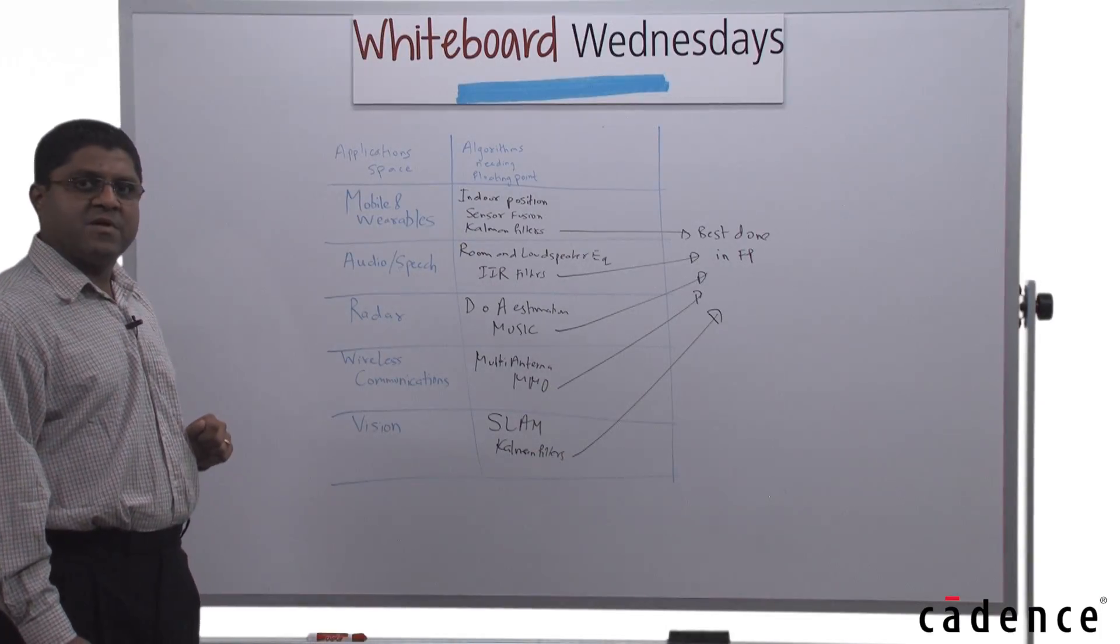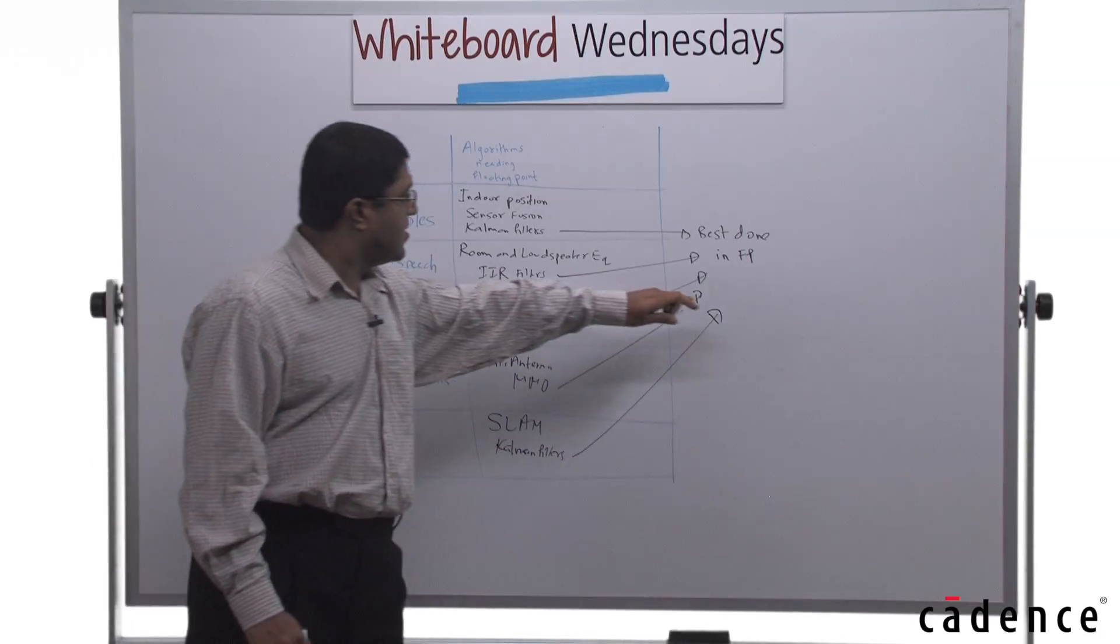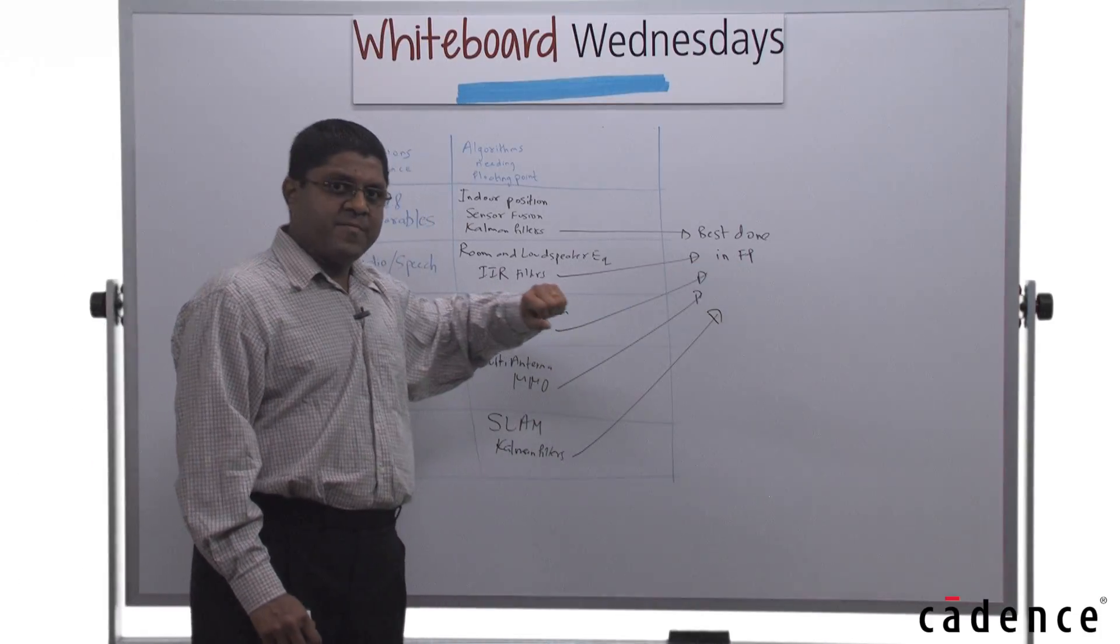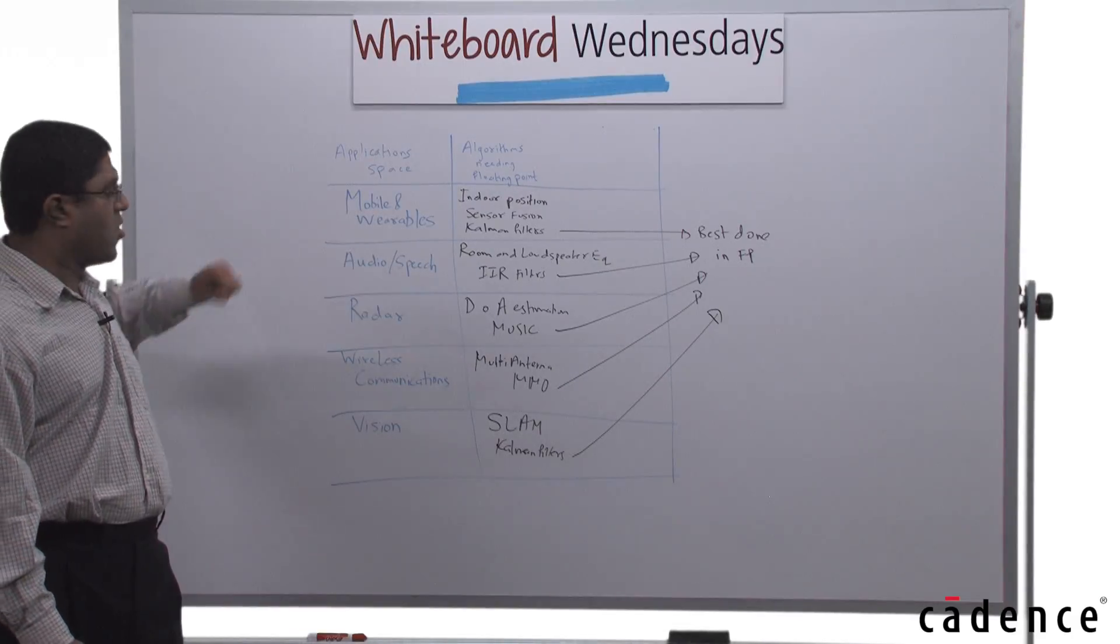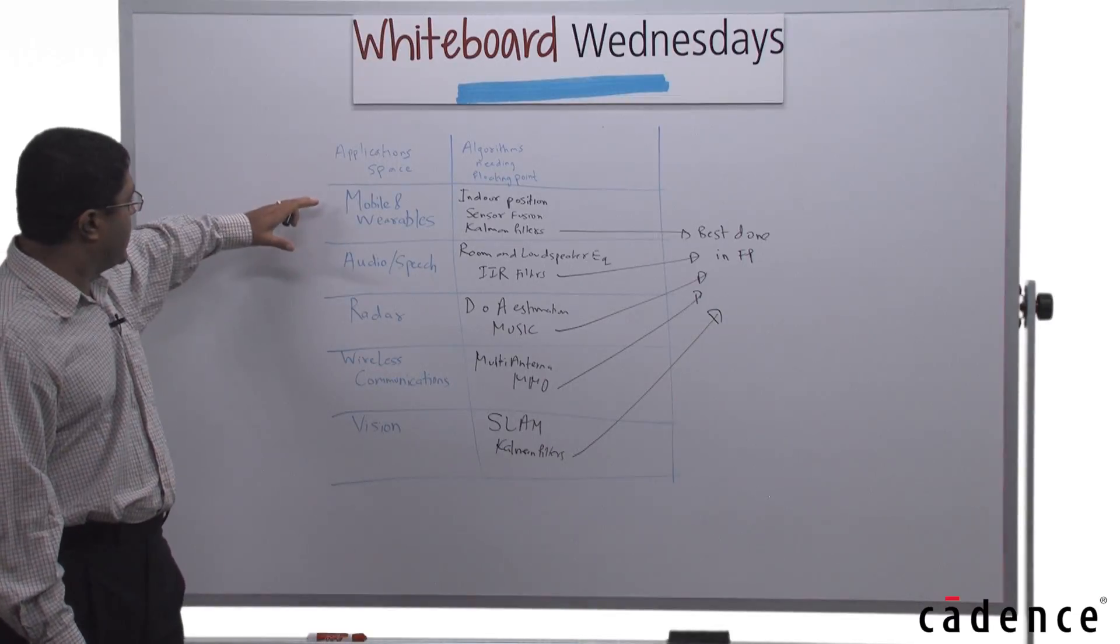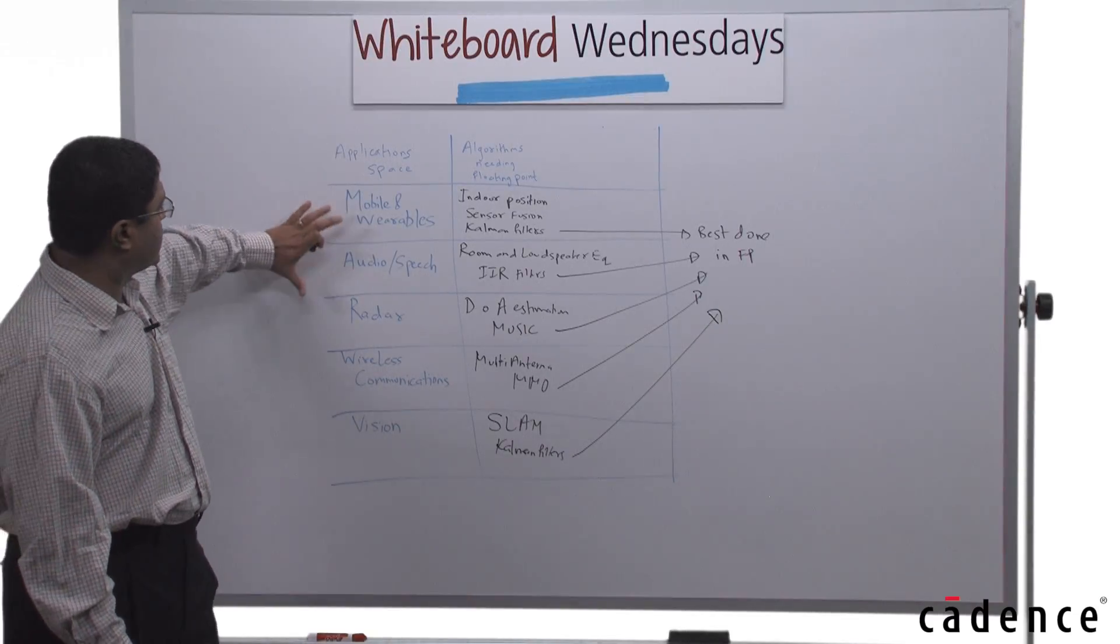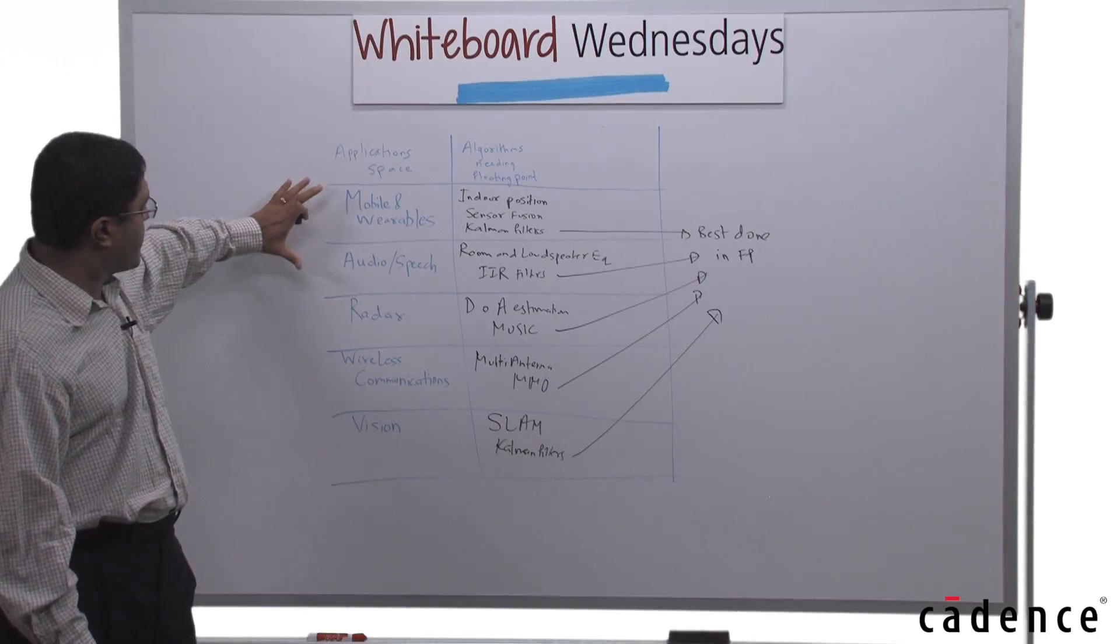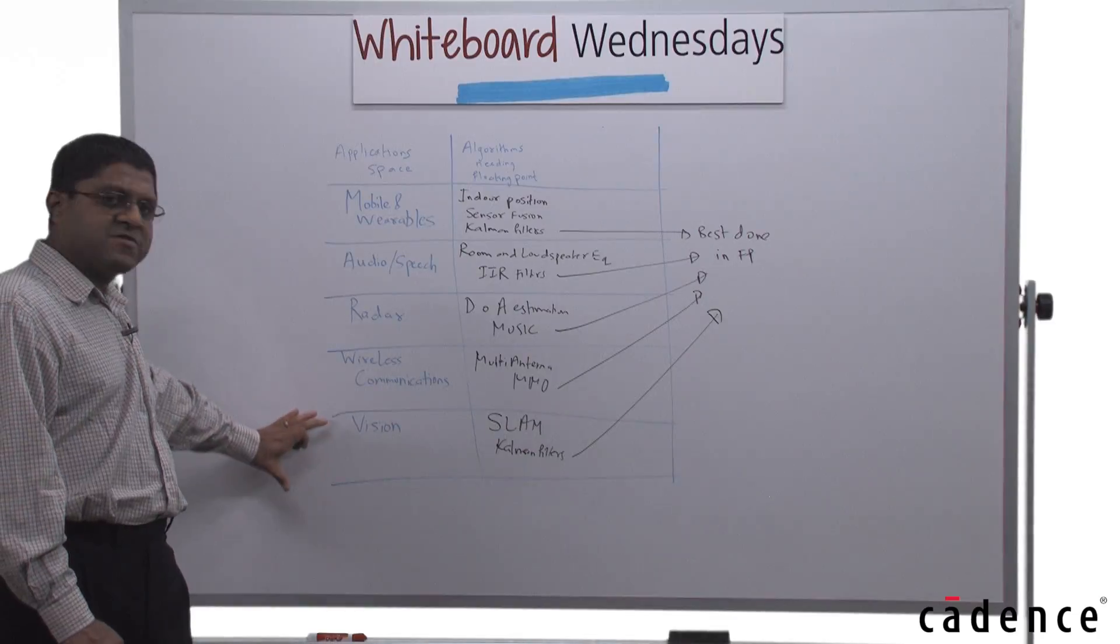For implementing these algorithms, the DSPs that are needed, they need to have floating point support and in terms of the available compute horsepower, the DSPs have to span from DSPs with relatively low to moderate compute for the space which needs that type of computing, whereas high compute needs for the spaces which needs high compute.